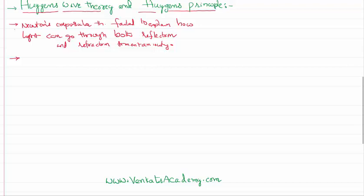Also, according to Newton's corpuscular theory, the velocity of light is actually more in a denser medium, but experiments proved that the converse is true — the velocity of light is actually more in a rarer medium. Not only that, people have discovered properties like interference and diffraction, which Newton's corpuscular theory also failed to explain.